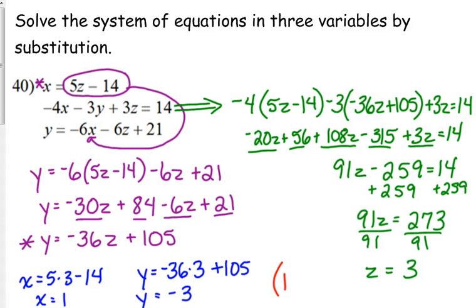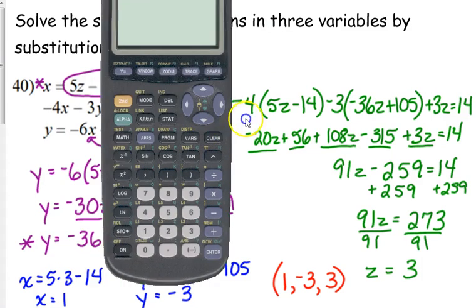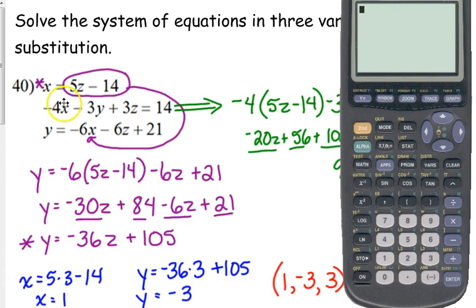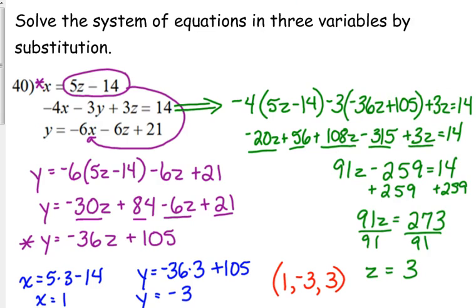So I do believe that our answer should be 1, negative 3, positive 3. I would always, always, always check that. And again, when you're doing this, your answer should be whole numbers. All the answers on this paper are whole numbers. So I would go to the equation that has all three variables in it. And I would plug in the x and the y and the z and make sure that it all checks out. And it does. It gives us 14.